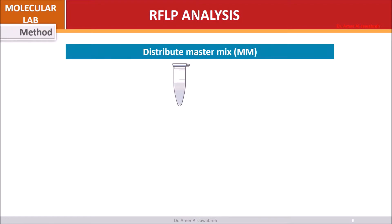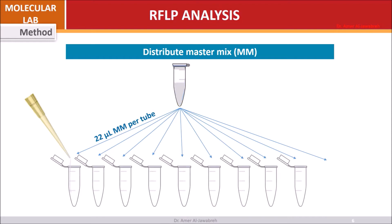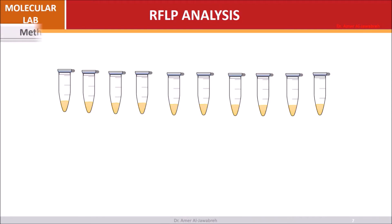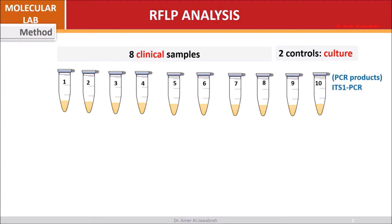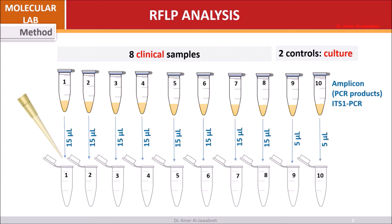Method: Distribute 22 microliters of master mix into sterile labeled microtubes. To each master mix microtube, add 15 microliters of clinical sample amplicon, or 5 microliters of culture amplicon.